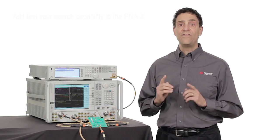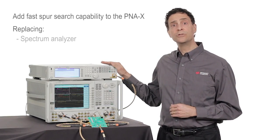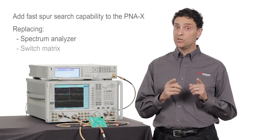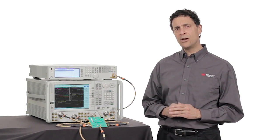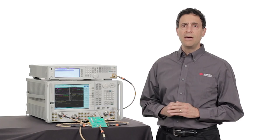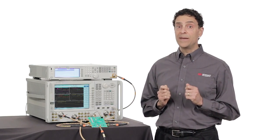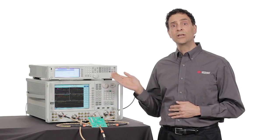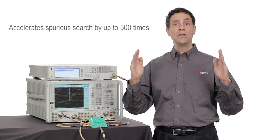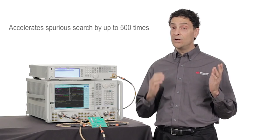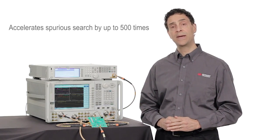The new PNA option adds fast spur search capability to the PNA-X, replacing a stand-alone spectrum analyzer, converter, and switch matrix in your test systems. Spurious measurements are a very important part of characterizing frequency converters, but they often take a great deal of time. With the new spectrum analyzer option, a PNA-X can quickly perform spurious searches across a broad frequency range, with measurements that are as fast or often faster than those from today's best stand-alone spectrum analyzers.